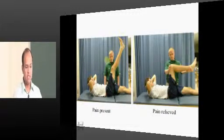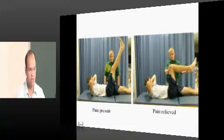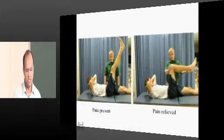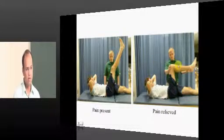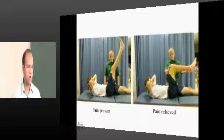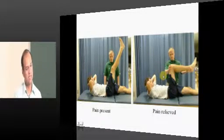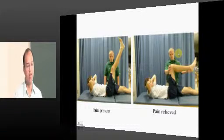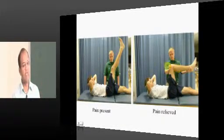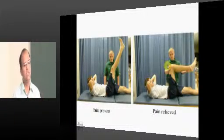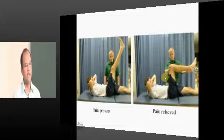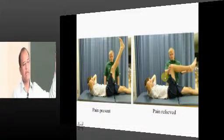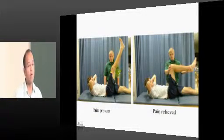The Lasègue test is a modification of straight leg raising. When the patient complains of pain at, say, 60 degrees of hip flexion, you ask them to flex the knee joint — pain goes off because the stretch is relieved. Once pain subsides, you can flex the hip further, but if you then extend the knee in that position, the patient has a lot of pain — that is the Lasègue test. It confirms that stretching an irritated nerve root reproduces the patient's symptoms. It is a nerve provocative test.